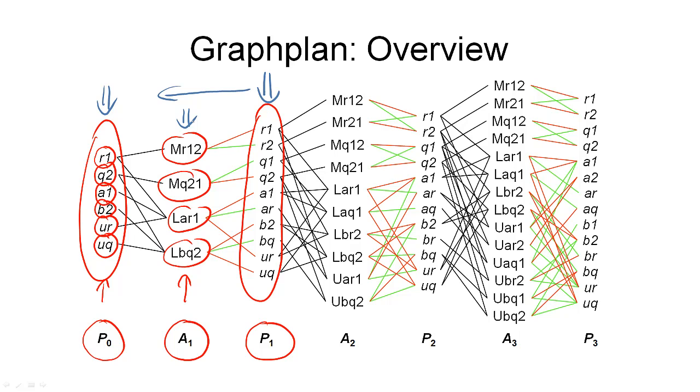If the backward search has been a plan, then we're done because we've solved the problem. If it doesn't find the plan, then the algorithm returns to the expansion step.